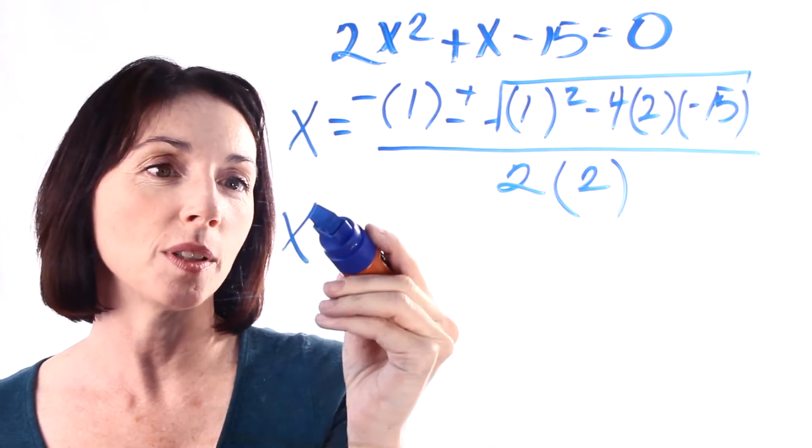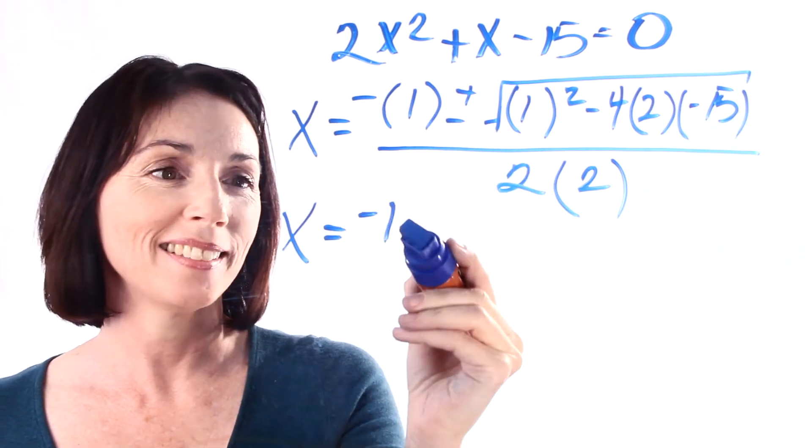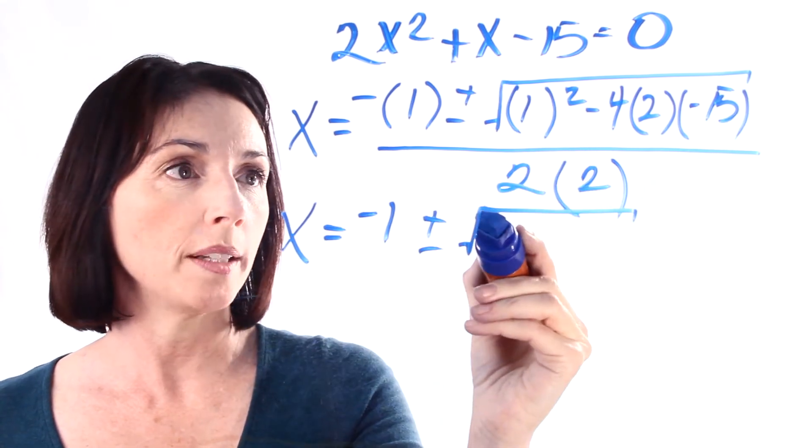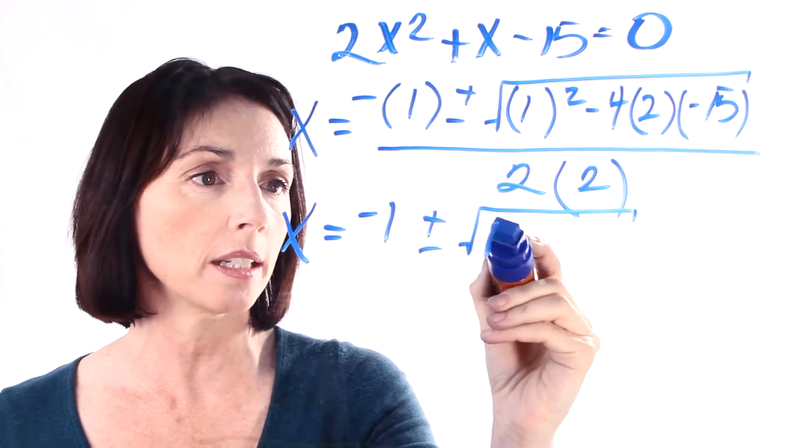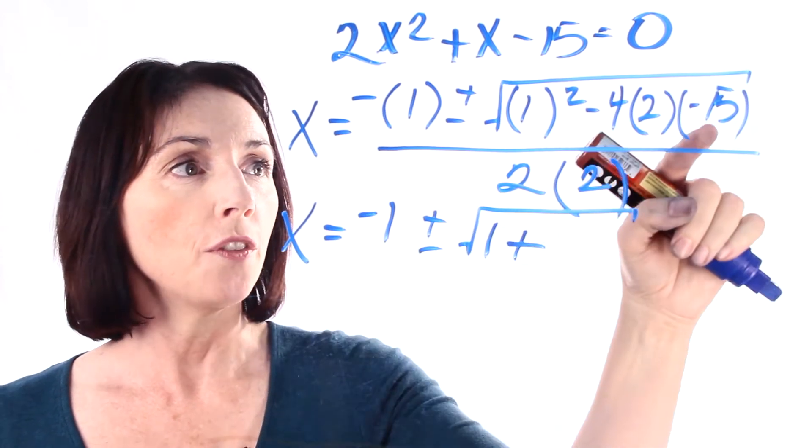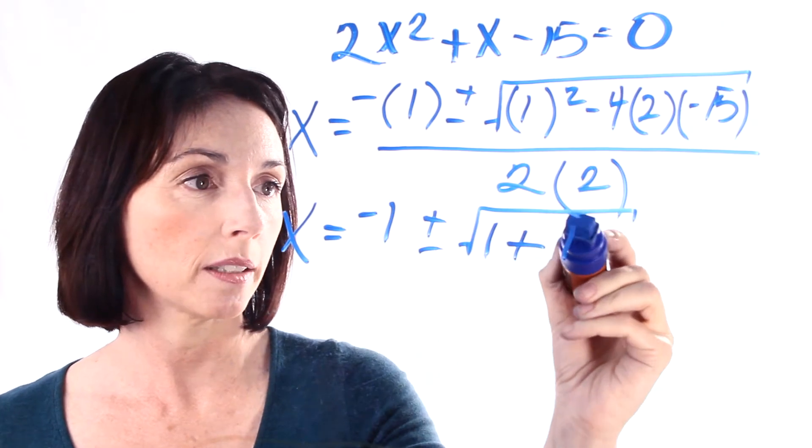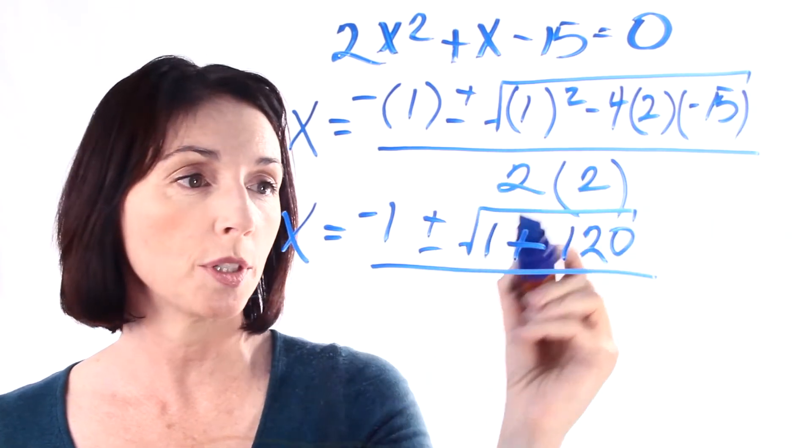So x equals negative 1 is just negative 1, plus or minus the square root of, 1 squared is just 1. Now we have a minus here times a minus here, so that's going to give us a plus. 15 times 2 is 30, 30 times 4 is 120. All of that is divided by 2 times 2, which is 4.